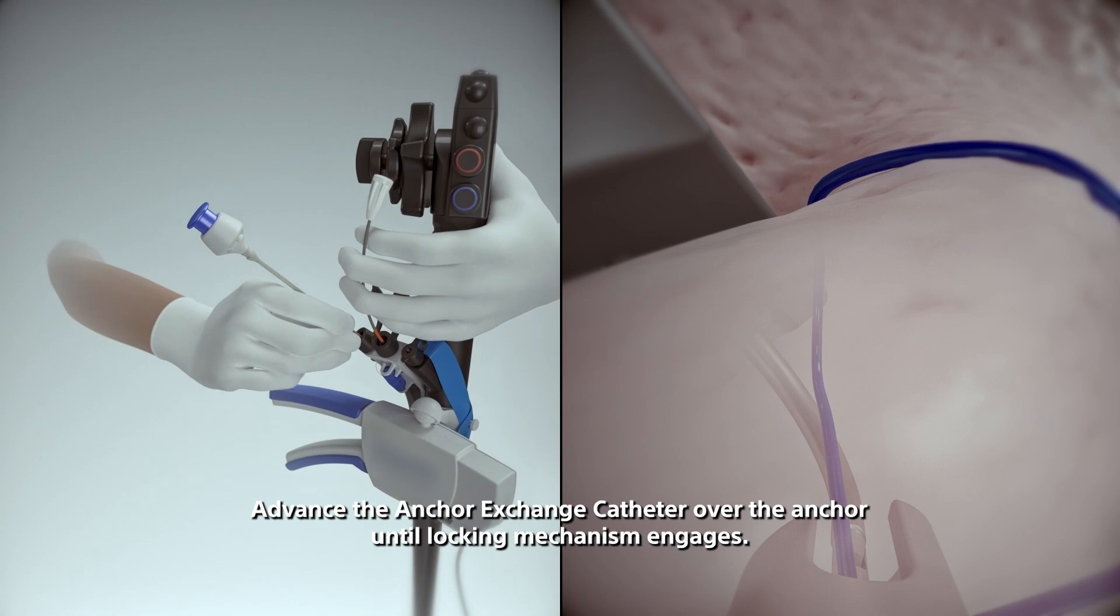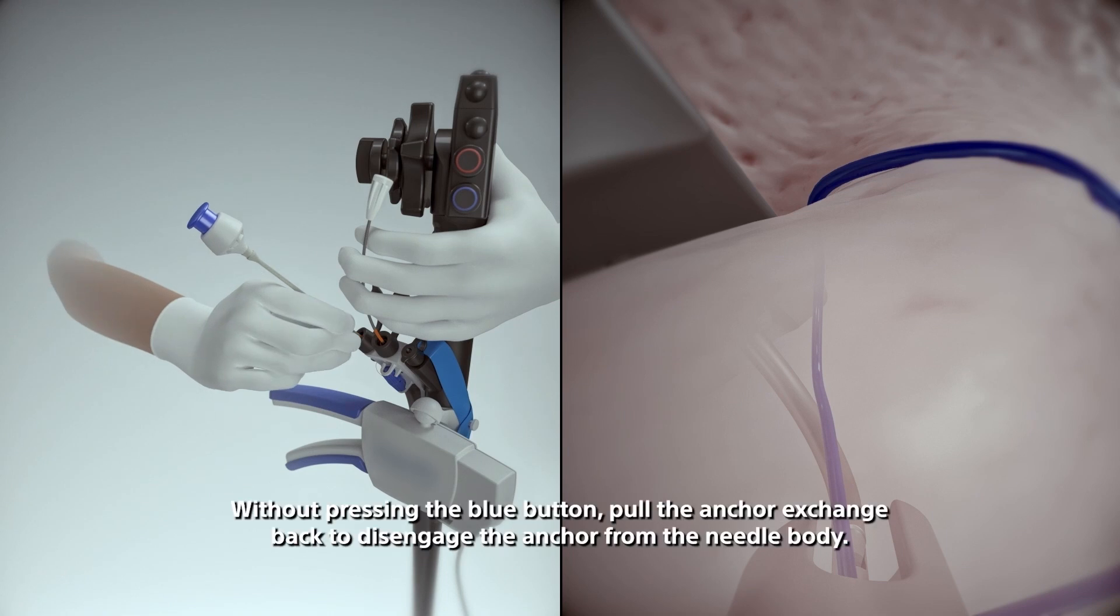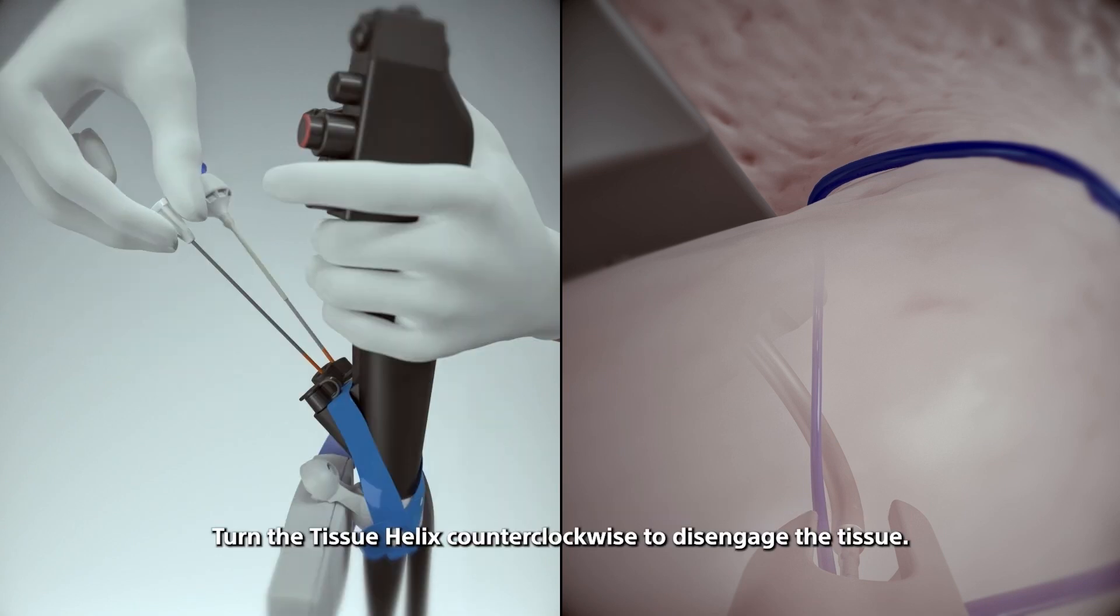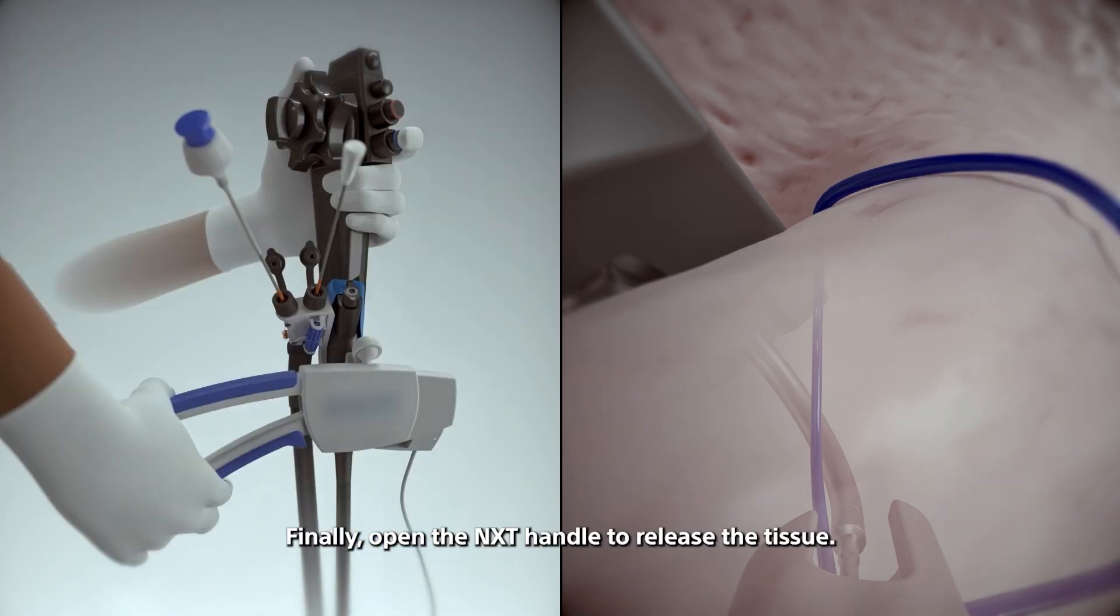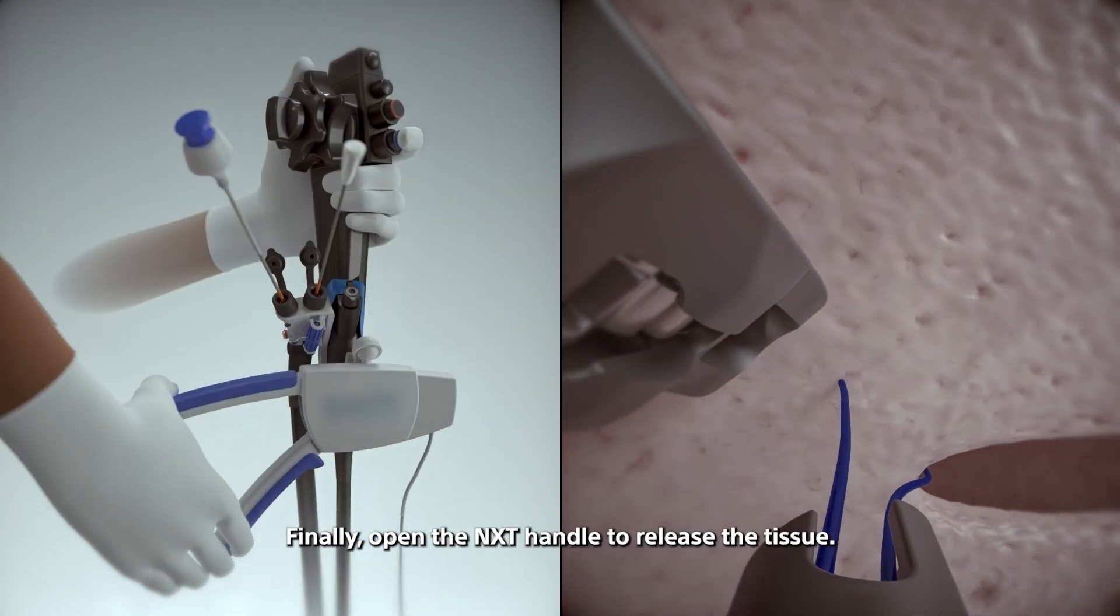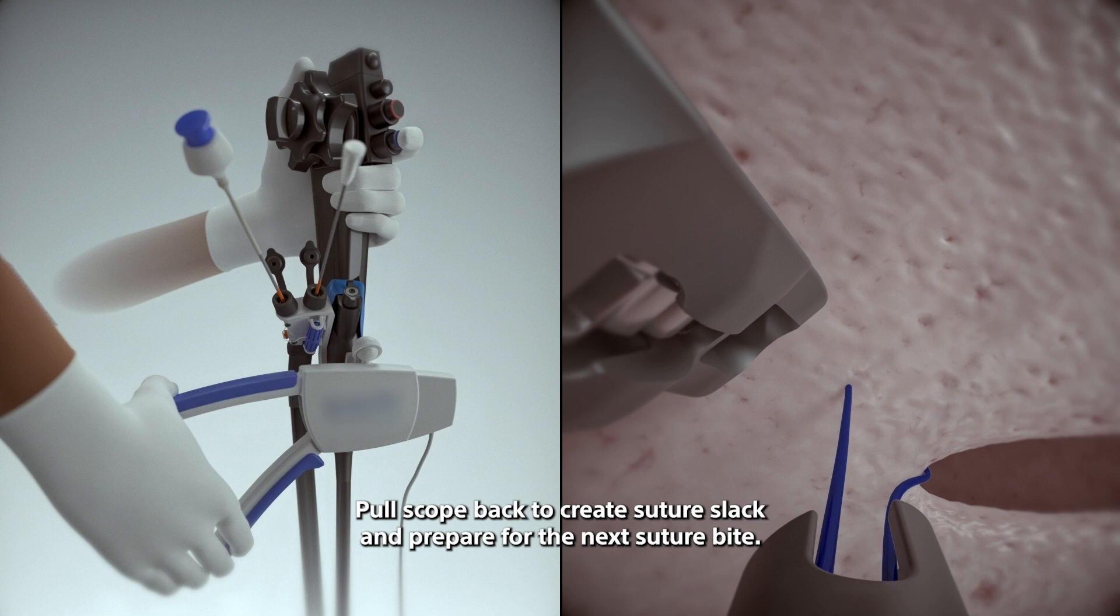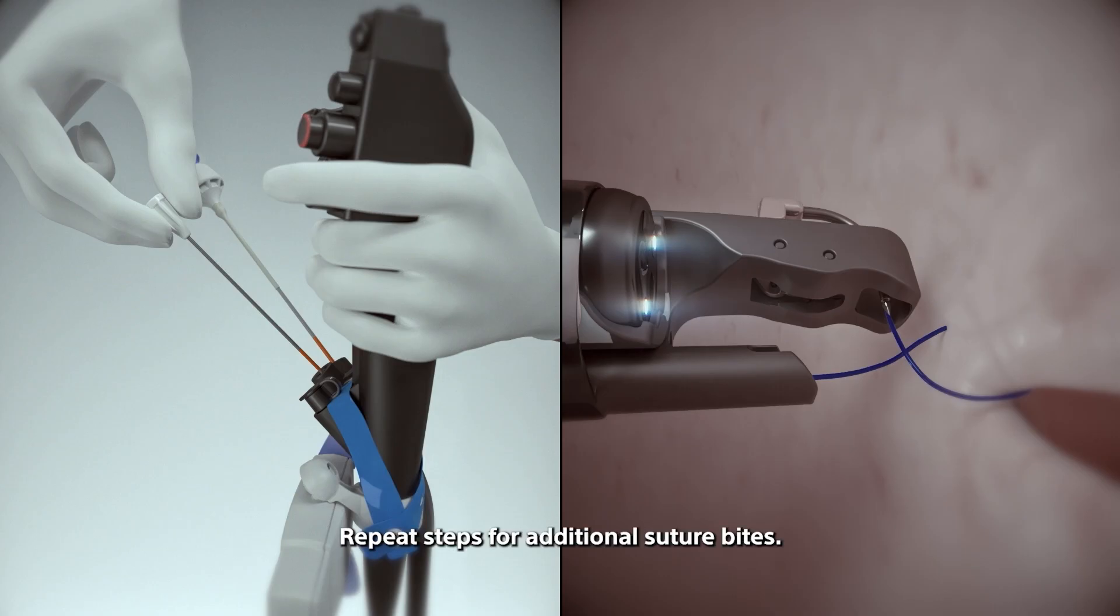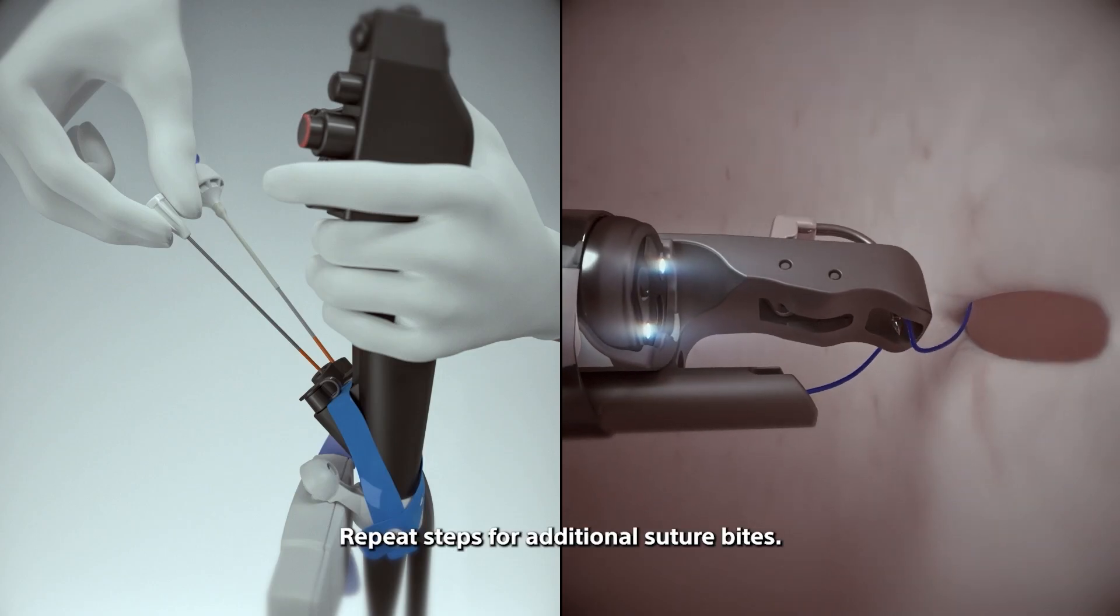Advance the anchor exchange catheter over the anchor until locking mechanism engages. Without pressing the blue button, pull the anchor exchange back to disengage the anchor from the needle body. Turn the tissue helix counterclockwise to disengage the tissue. Finally, open the NXT handle to release the tissue. Pull scope back to create suture slack and prepare for the next suture bite. Repeat steps for additional suture bites.